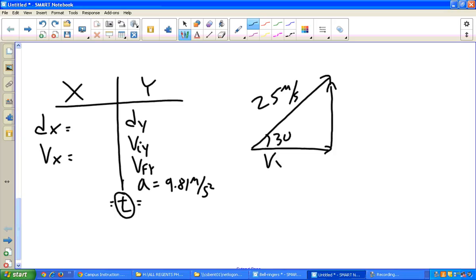So I have Vx and Viy. And you remember from your physics formulas or from doing trig, we know that Vx is going to be Vi cos theta. So it's 25 cosine 30 degrees. And Viy is going to be 25 times the sine of 30 degrees.